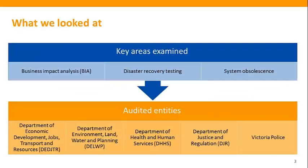We assessed whether sampled agencies' ICT disaster recovery processes are likely to be effective in the event of a disruption. We examined disaster recovery at Victoria Police and four departments that provide essential government services: the Department of Economic Development, Jobs, Transport and Resources; the Department of Environment, Land, Water and Planning; the Department of Health and Human Services; and the Department of Justice and Regulation.